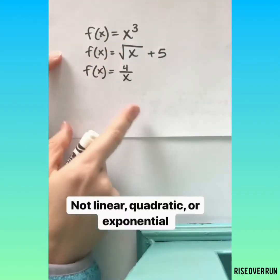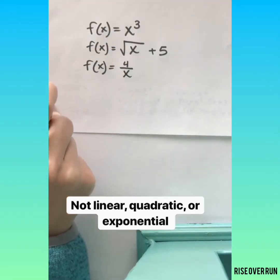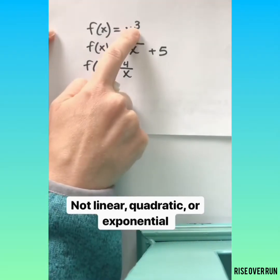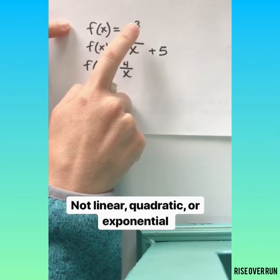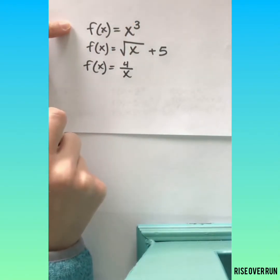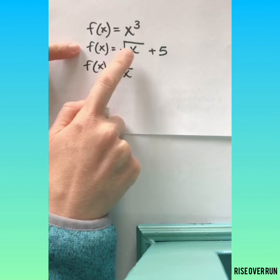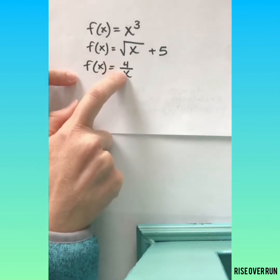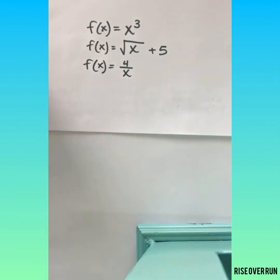These are the types of equations that you might do in later math classes. But these are not linear, they're not quadratic, and they're not exponential. This one has a 3 for an exponent so that's a cubic function. And we haven't really done those and you probably won't do much of that in Algebra 1. If you see a variable under a square root, that too doesn't count as linear, quadratic, or exponential. And if you see a fraction or division by your variable, that won't be linear, quadratic, or exponential either.